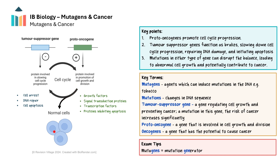While they have opposing roles, their coordinated actions ensure that cell growth, division, and death occur in a controlled and balanced manner. Tumour suppressor genes encode proteins that slow down cell cycle progression and prevent uncontrolled cell division. They act as brakes on the cell cycle, ensuring that cells do not divide excessively. They are involved in repairing DNA damage and ensuring genetic stability. If DNA damage is detected, these genes can halt the cell cycle to allow for repair, or initiate apoptosis, or programmed cell death, if the damage is irreparable.